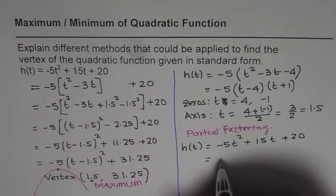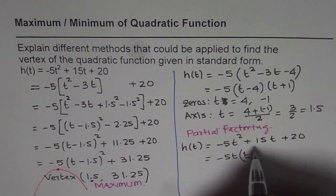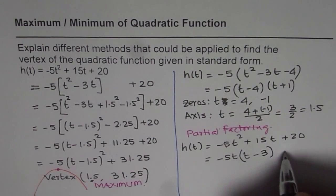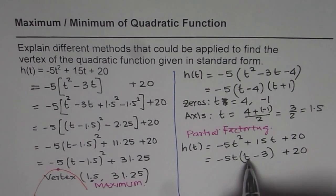And that is the reason why we call it partial factoring. So if I factor the first two I can take -5t as a common factor. We are left with t - 3 + 20. Now this gives you two points. If t is 0 that means the y intercept is 20. But the value of 20 you can get at t = 3 also.